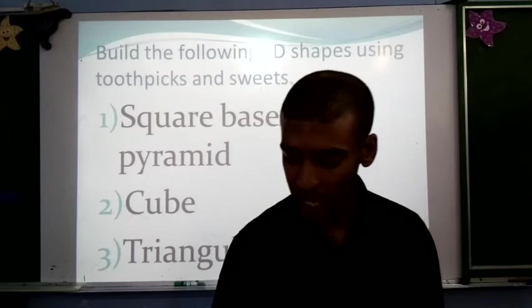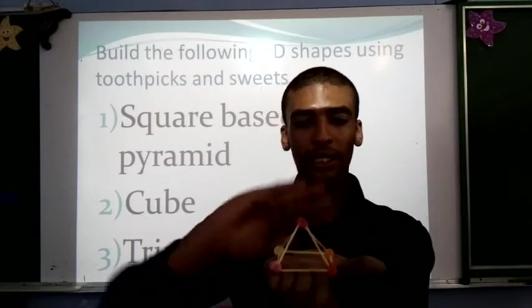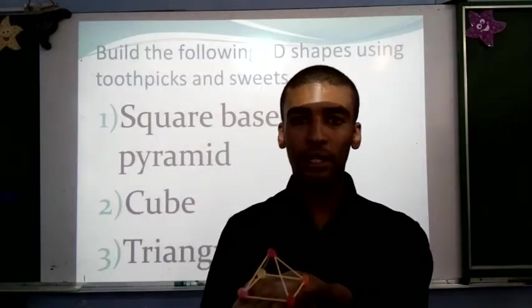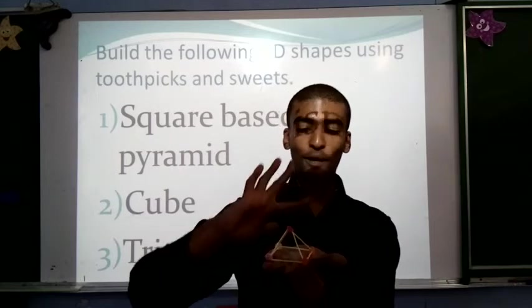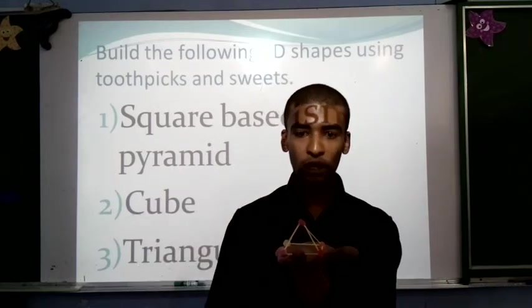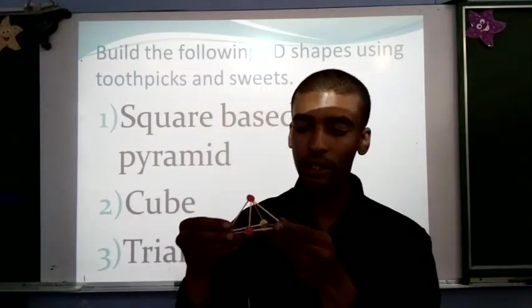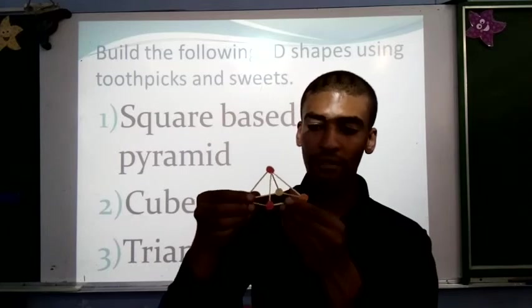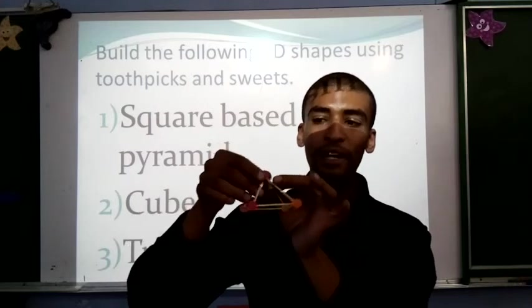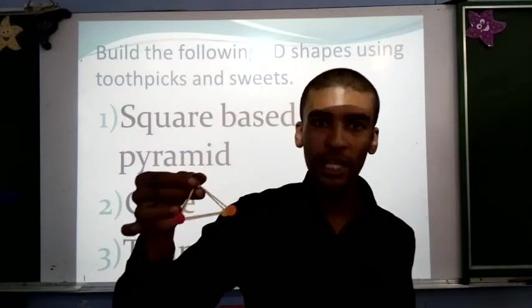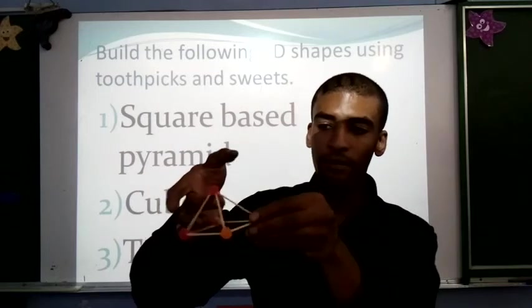Now, for this, what we are going to be looking at are, firstly, how many sides does our shape have? So, with our sides, we have 1 at the bottom, 2, 3, 4, 5, for our square based pyramid. For our edges, we are going to count how many toothpicks were used to make it. So, we've got 1, 2, 3, 4, 5, 6, 7, 8. And finally, for our vertices, how many jelly tots did we use in order to make the shape? 1, 2, 3, 4, 5.